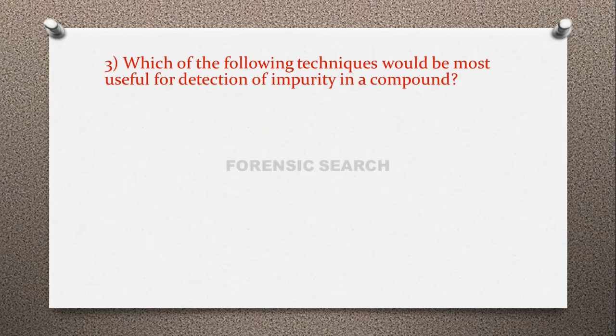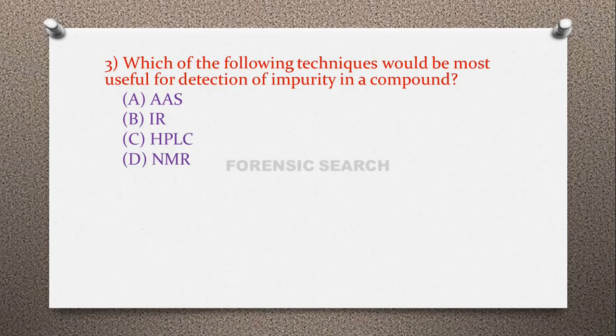Question 3: Which of the following techniques will be most useful for detection of impurity in a compound? Option A: atomic absorption spectroscopy (AAS), option B: IR spectroscopy, option C: HPLC, option D: NMR (nuclear magnetic resonance spectroscopy). The correct answer is HPLC — it is the most useful technique for detection of impurity in a compound.